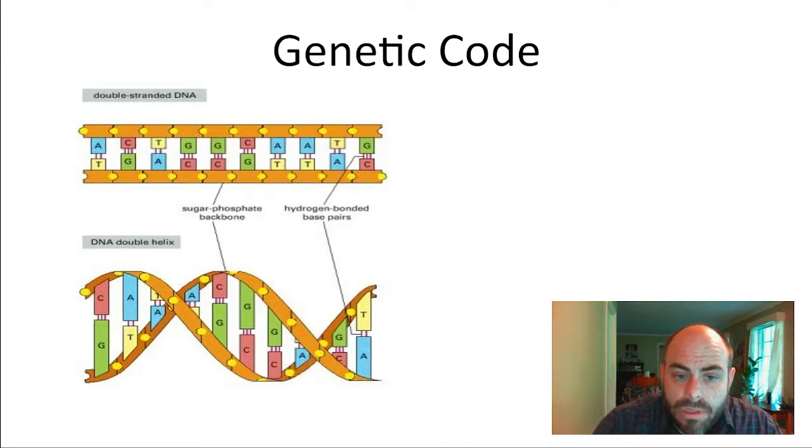The third characteristic of all living things is all living things have a genetic code, and that genetic code is DNA. DNA is the genetic code found in all living things. We will have an entire unit talking about DNA and all the fun things about it.